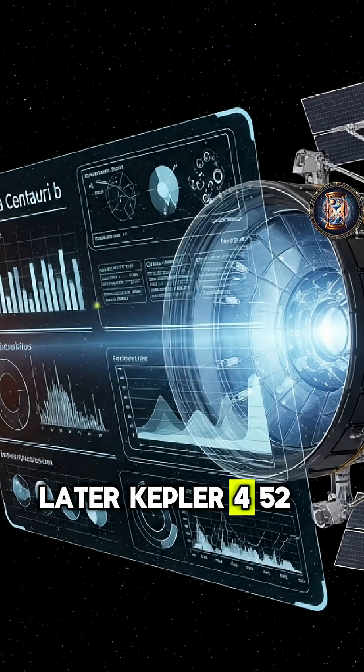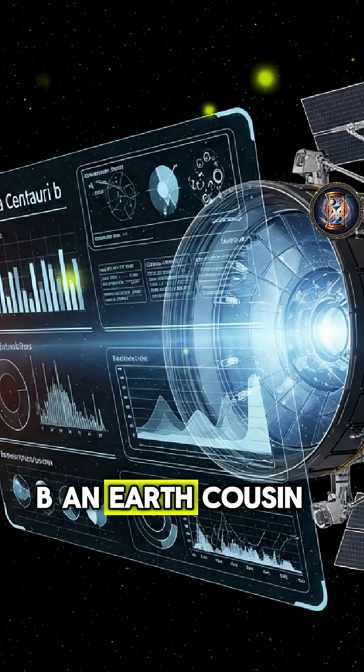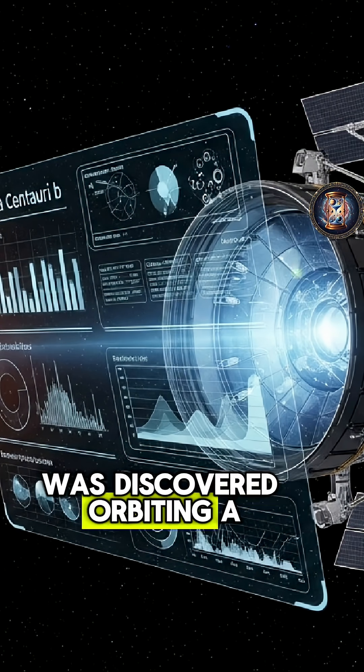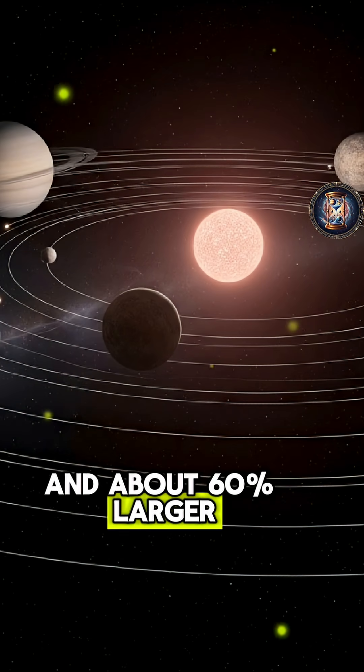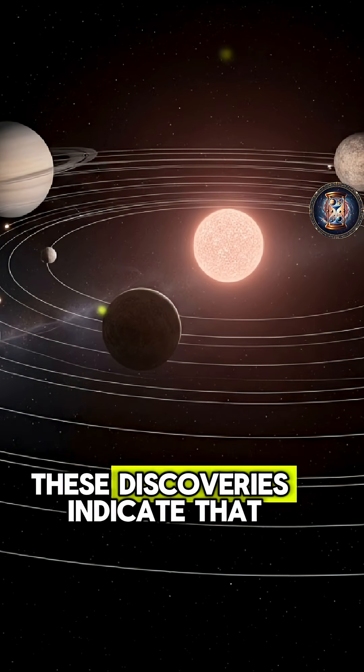Later, Kepler-452b, an Earth cousin, was discovered orbiting a Sun-like star with a similar orbital period and about 60% larger than Earth.